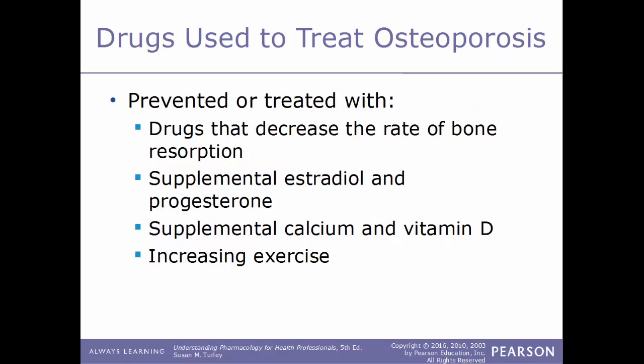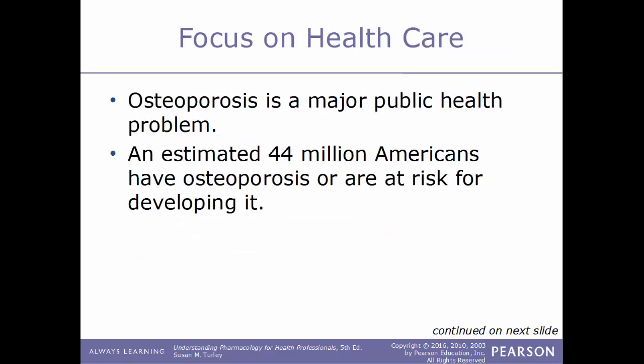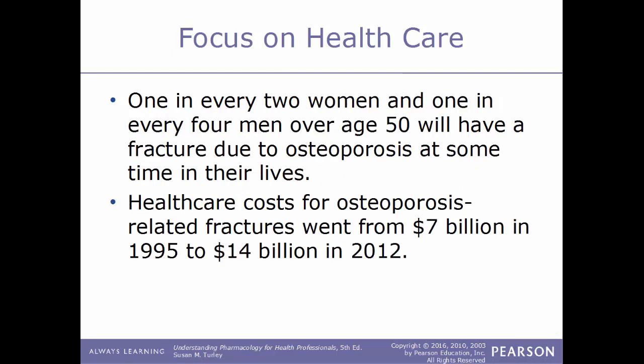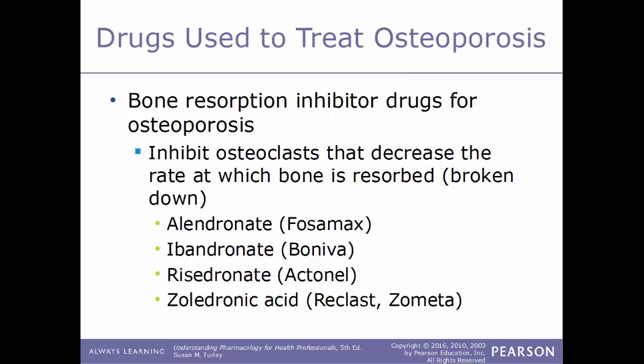Osteoporosis can be prevented or treated with drugs that decrease the rate of bone reabsorption, supplemental estradiol and progesterone, supplemental calcium and vitamin D, and increasing levels of exercise. Osteoporosis is a major public health problem — an estimated 44 million Americans have osteoporosis or are at risk. One in two women and one in four men over age 50 will have a fracture due to osteoporosis at some point. Healthcare costs for osteoporosis-related fractures went from $7 billion in 1995 to $14 billion in 2012.